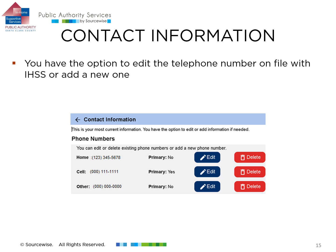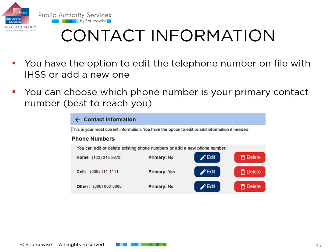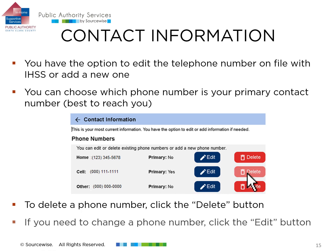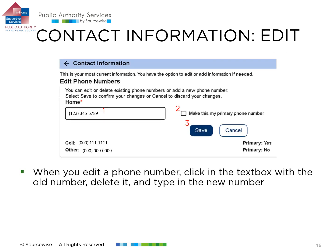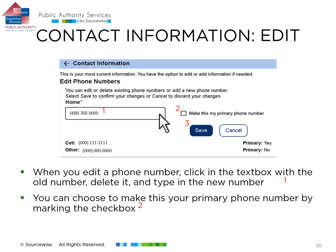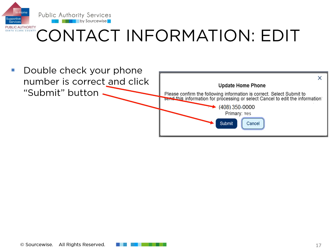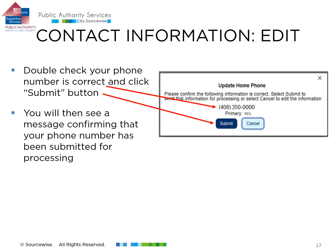When updating your telephone number, you can change the one currently on file or you can add a new telephone number, such as adding a house line or a mobile phone. You can also choose which telephone number is the best to reach you by setting one as your primary. To delete a telephone number that you no longer want on your account, click the Delete button on the right. To change or add a telephone number, click the Edit button. To edit an existing telephone number, click the text box, delete the old number, and type in the correct one. You can choose to make this your primary number by clicking the check box. Double check that everything is correct and click the Save button. Make sure everything looks right and then click the Submit button. A message will pop up confirming the change. Click the OK button.